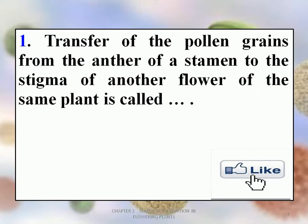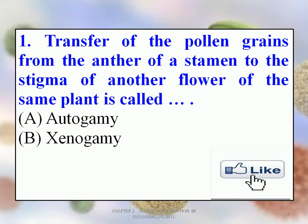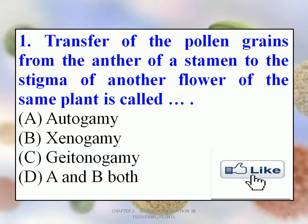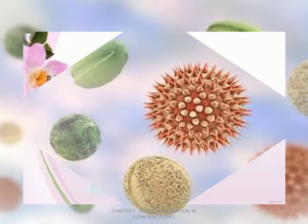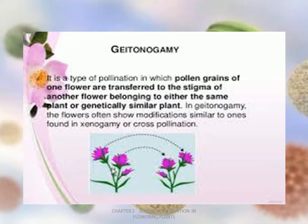First MCQ of the day: Transfer of the pollen grains from the anther of a stamen to the stigma of another flower of the same plant is called dash. Options: A. Autogamy, B. Xenogamy, C. Geitonogamy, D. A and B Both. The correct answer is C. Geitonogamy. It is a type of pollination in which pollen grains of one flower are transferred to the stigma of another flower belonging to either the same plant or a genetically similar plant.